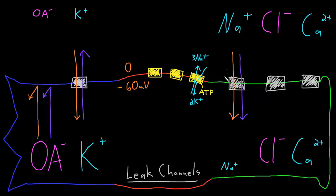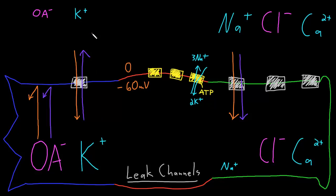When the membrane is permeable to multiple ions that have electrochemical driving forces, the resulting membrane potential is a weighted average of the equilibrium potentials of those ions, weighted by their permeability. At rest, the membrane is much more permeable to potassium than sodium, so the resting potential is much closer to the equilibrium potential of potassium. Because concentrations and permeabilities are usually stable in resting neurons, the resting potential is stable too. A little potassium dribbles out and a little sodium dribbles in, matched by ongoing activity of the sodium-potassium pump, which both creates and maintains these concentration gradients over time.